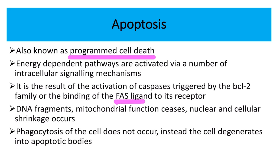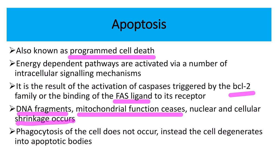In apoptosis, Fas ligand and Bcl-2 are activated, leading to caspase activation, DNA fragmentation, cessation of mitochondrial function, and nuclear and cellular shrinkage, followed by phagocytosis. Apoptosis is the body's way of removing a cell that is non-functional — it is a deliberate, controlled process.